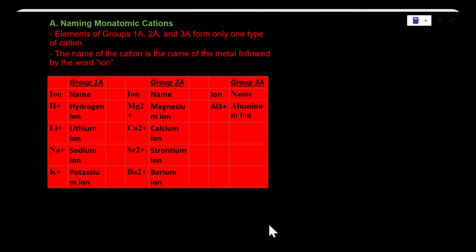I want to briefly go over naming ionic substances. For the main group elements, the naming system is pretty straightforward. Elements in groups 1A, 2A, and 3A form only one type of cation.